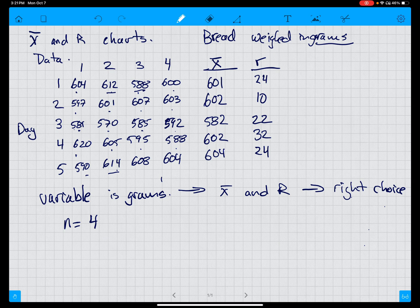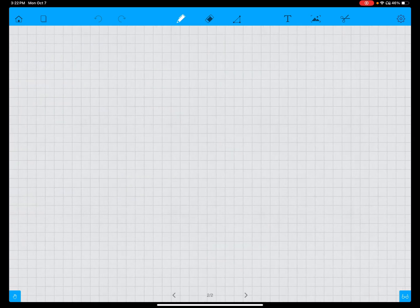We have ranges and we have averages. We then calculate X-bar-bar. X-bar-bar is the average of 601, 602, 582, 602, 604, and that is 598.2. R-bar is equal to the average of 24, 10, 22, 22, 24, and that is 22.4. So we know N is 4, we know what X-bar-bar and R-bar is, so we simply move to the next step.